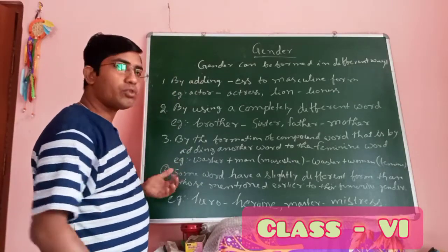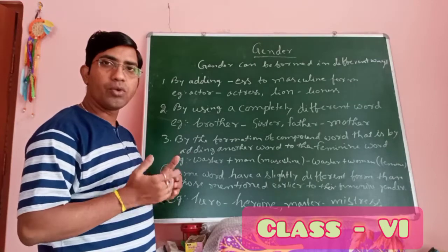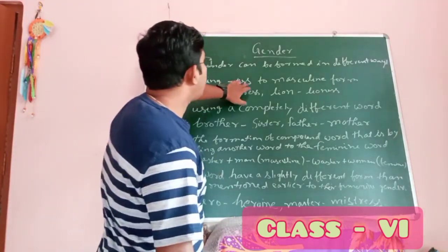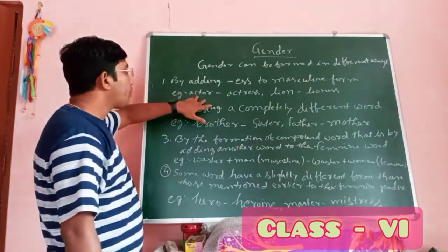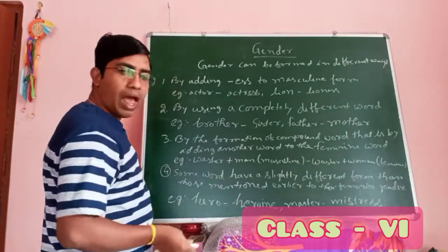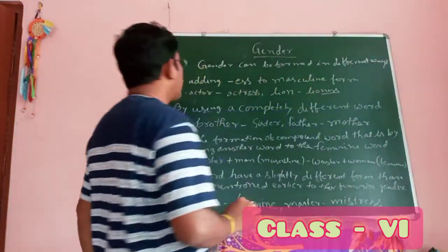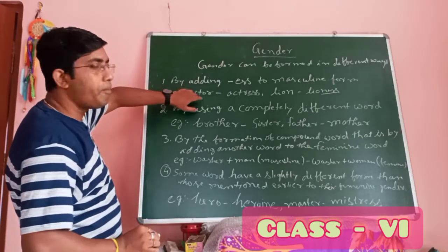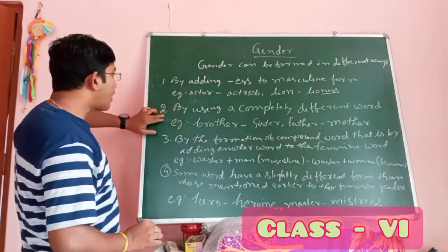Now, gender can be formed in different ways. Sometimes you can change from masculine to feminine by adding '-ess' to the masculine form. Like 'actor' becomes 'actress', and 'lion' becomes 'lioness'. This is how you make masculine to feminine gender.